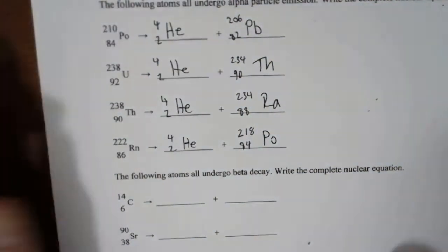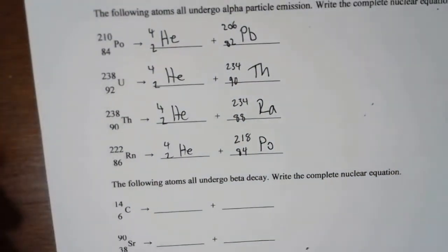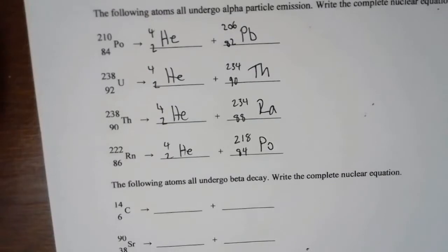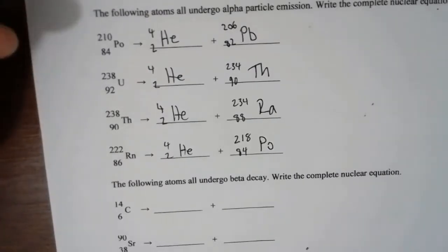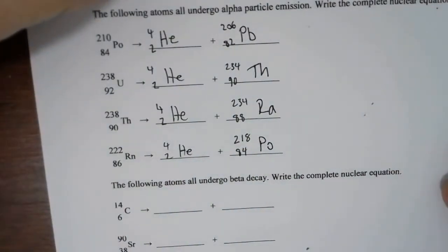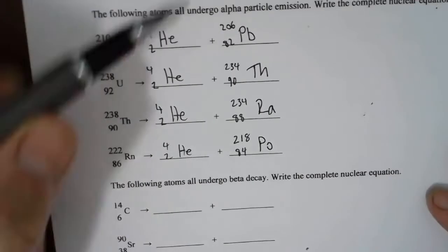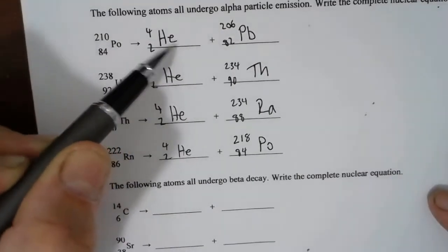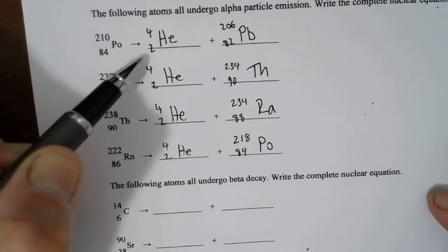So that's our alpha decay nuclear equations. Always remember that the mass decreases by 4 and the atomic number decreases by 2. And this is how we express our alpha particle as a helium nucleus with a mass of 4 and an atomic number of 2.